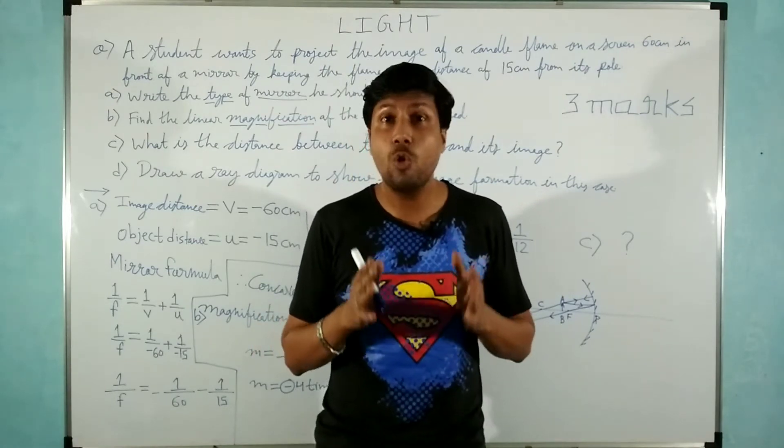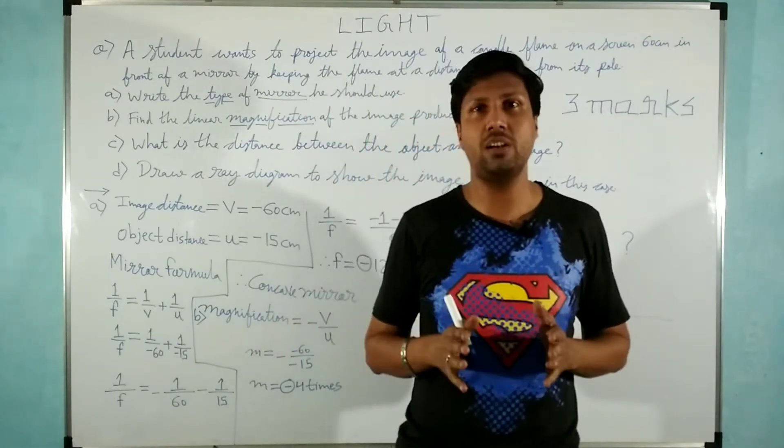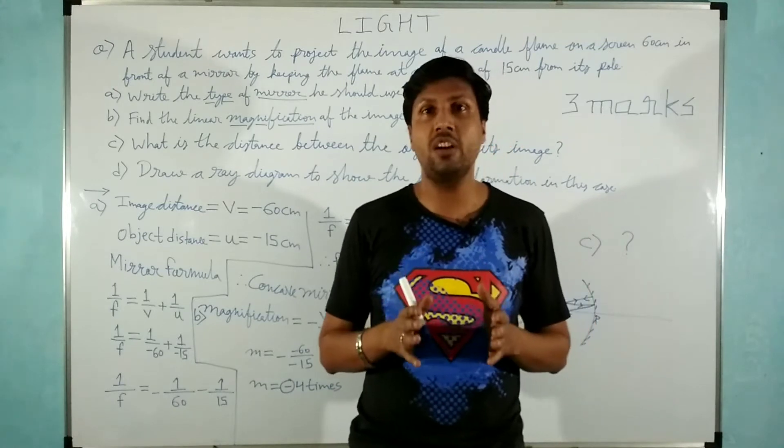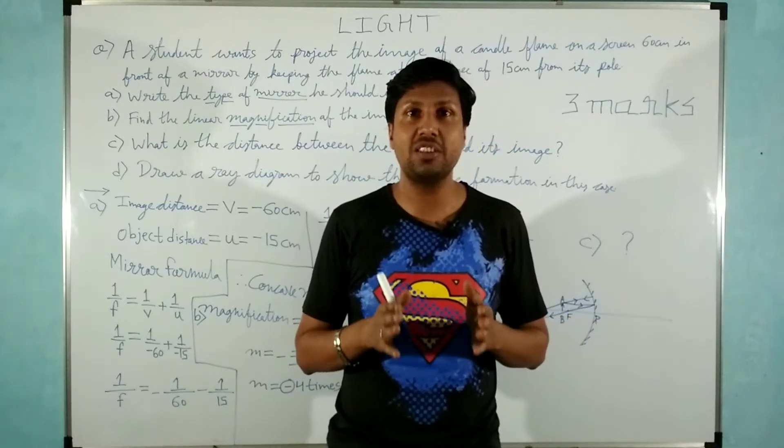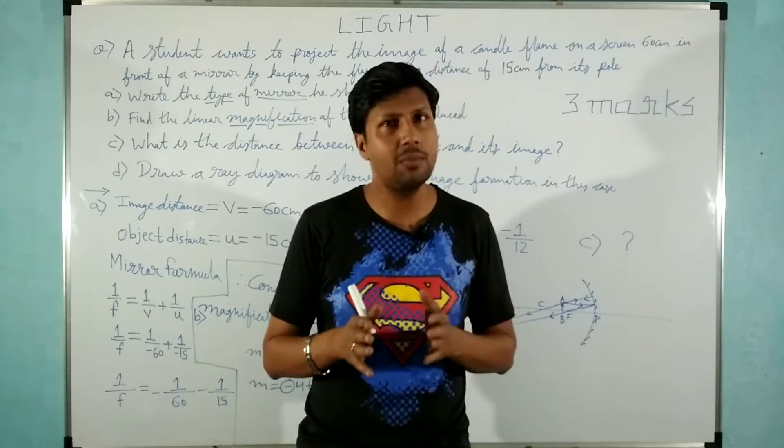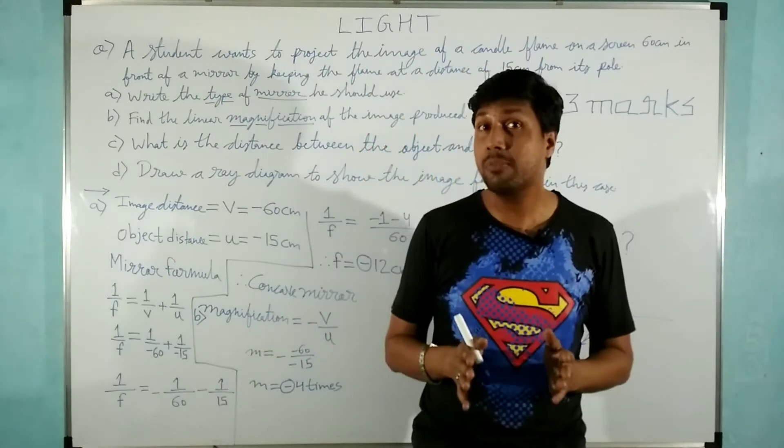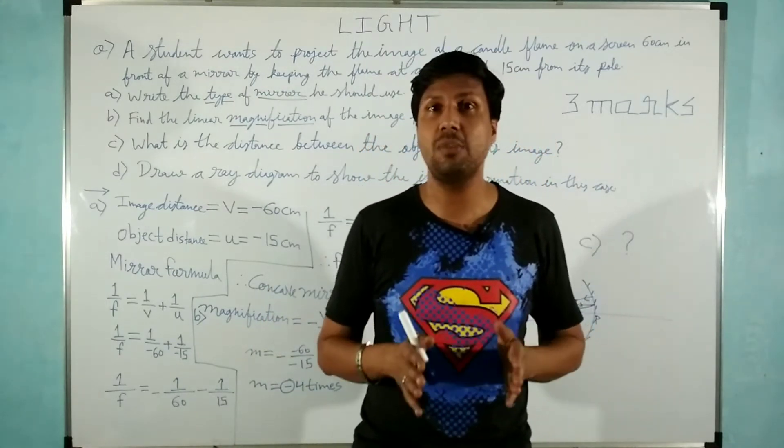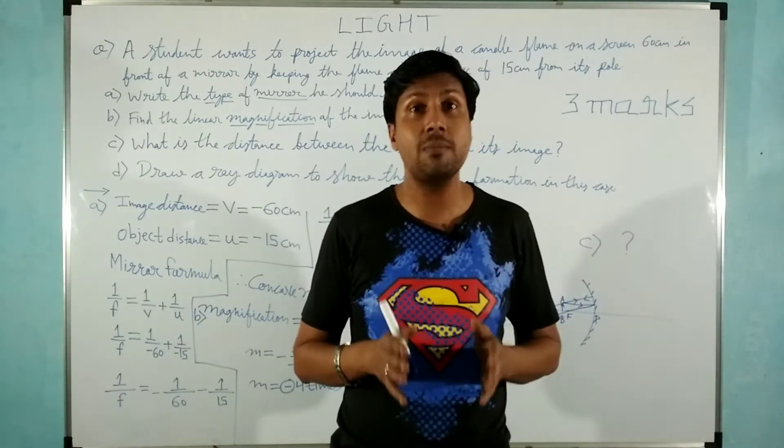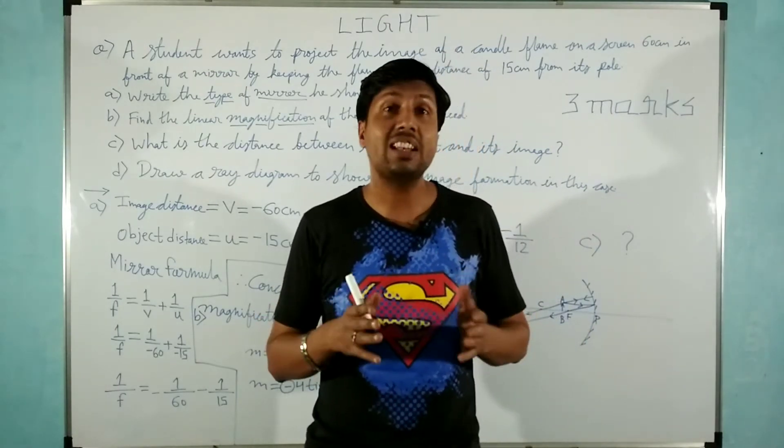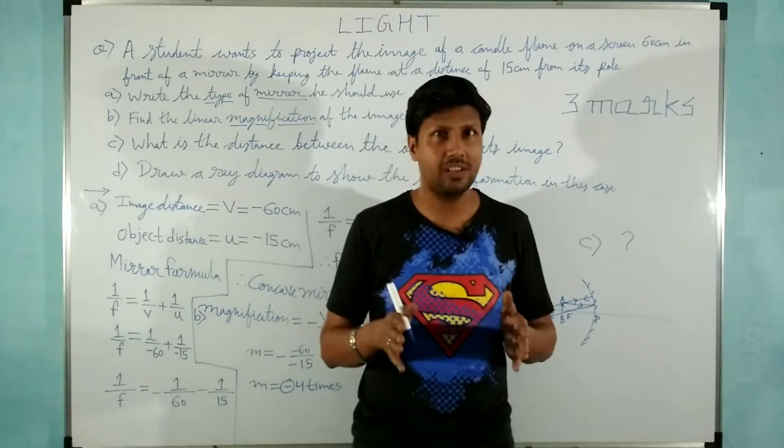So it happens only in case of concave mirror. Because only concave mirror forms a real image that can be obtained on a screen. Real image itself means it can be obtained on a screen. Convex mirror cannot form a real image or does not form an image that can be obtained on a screen.